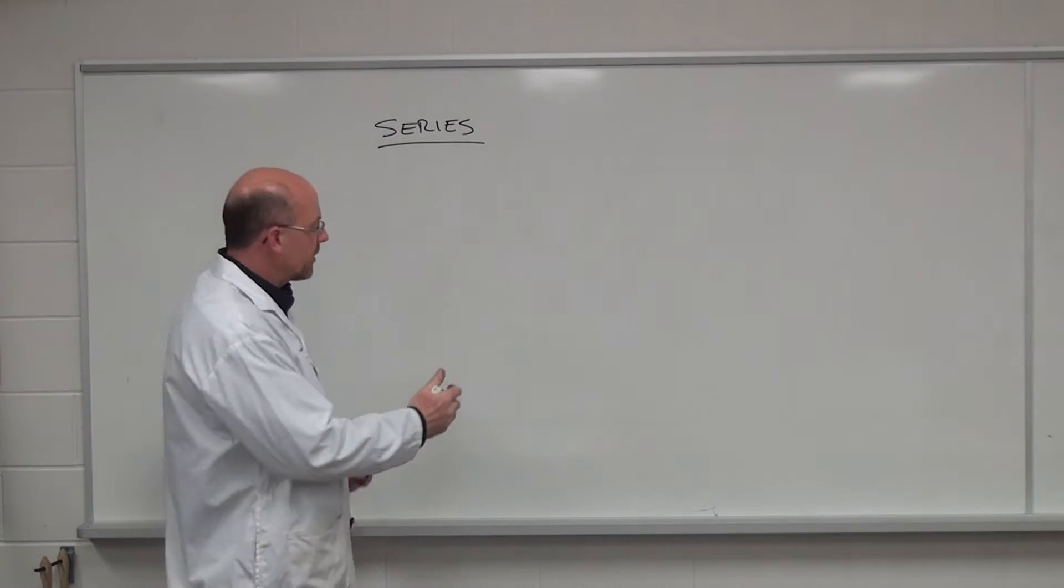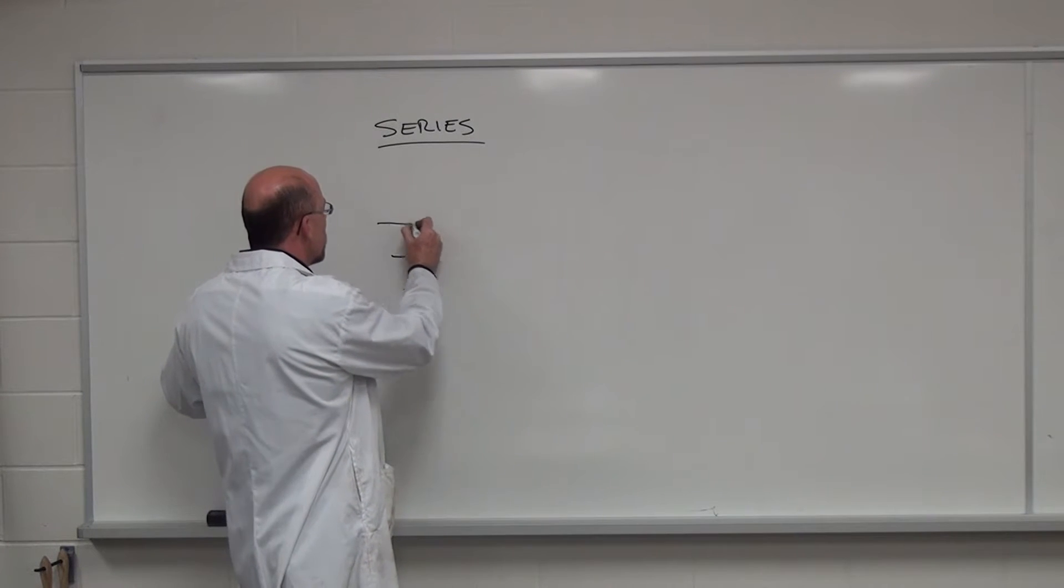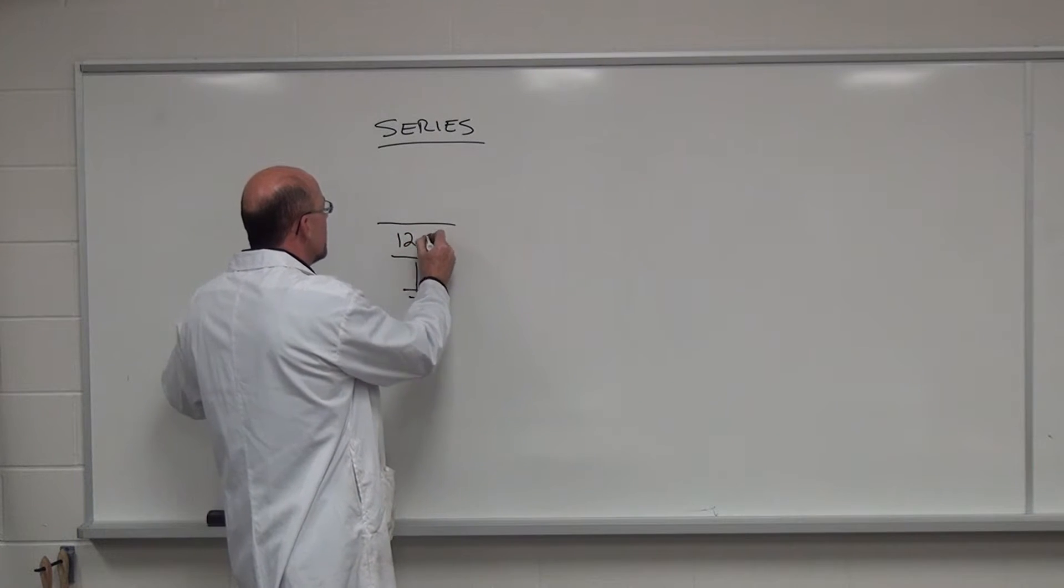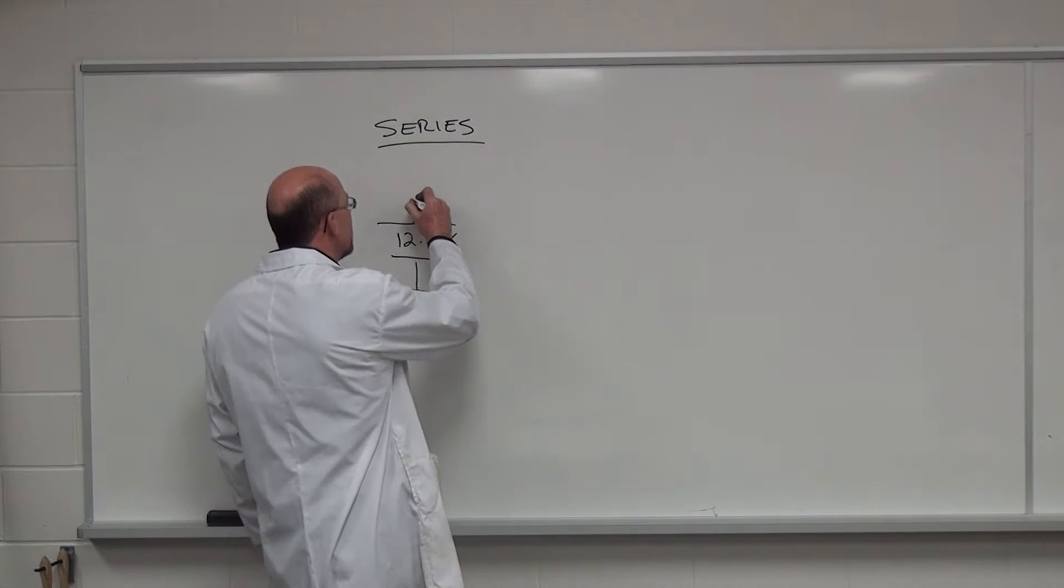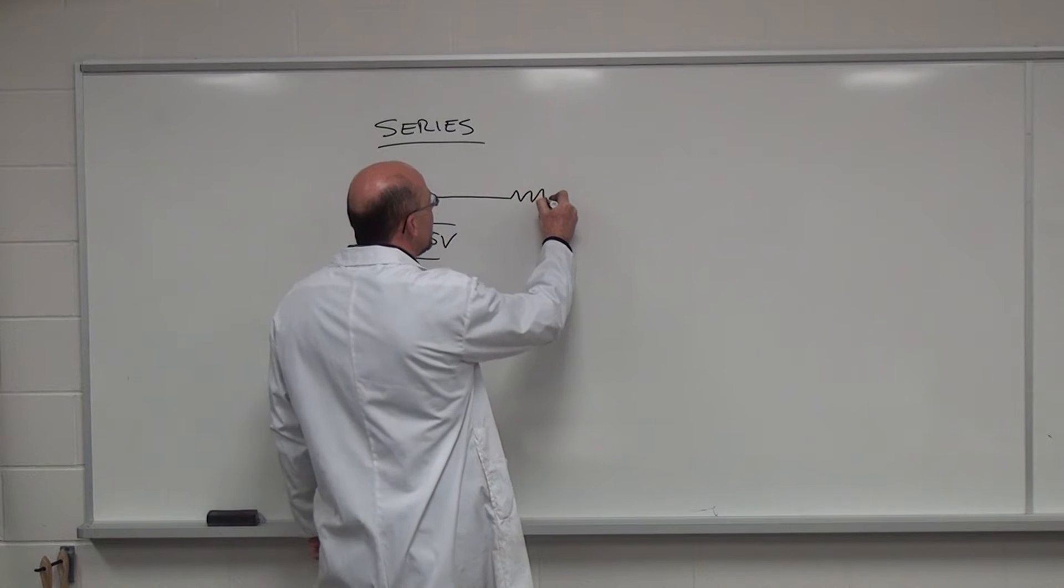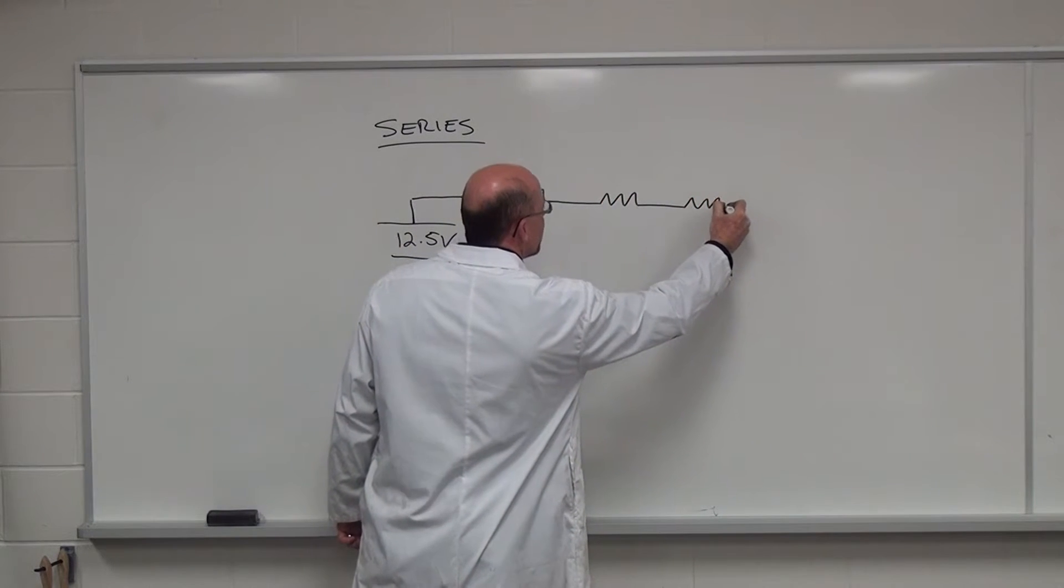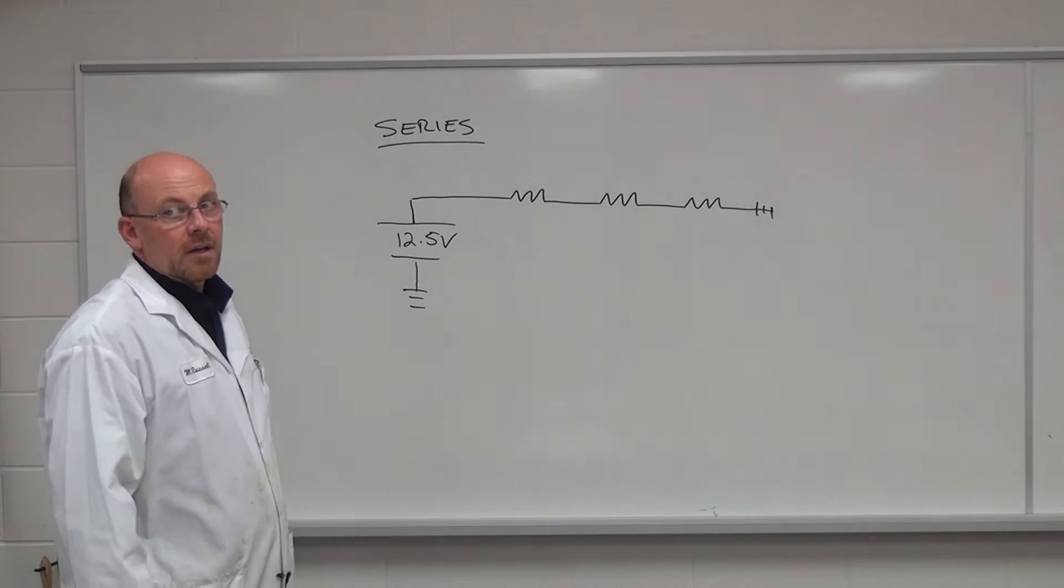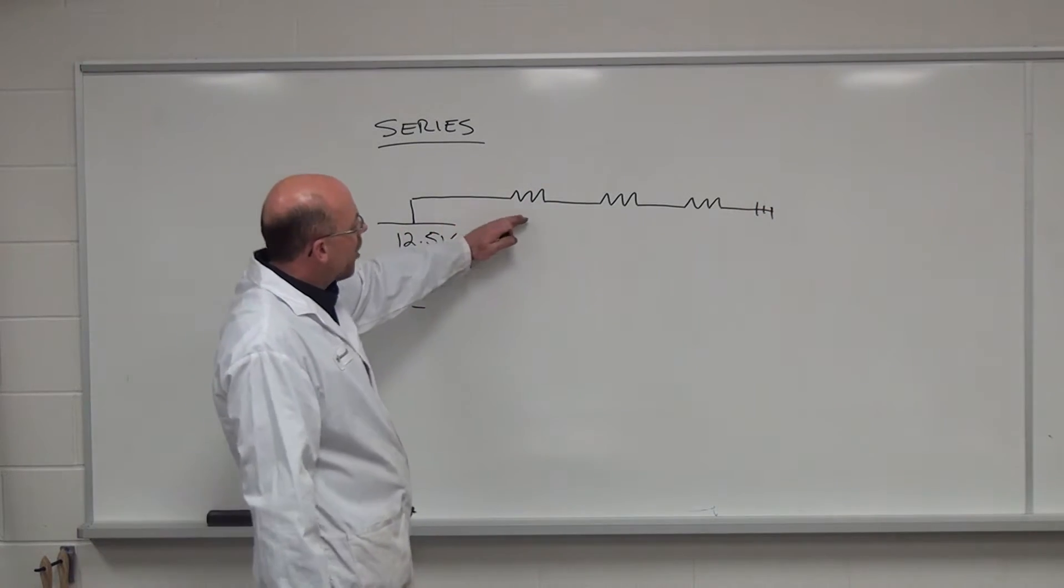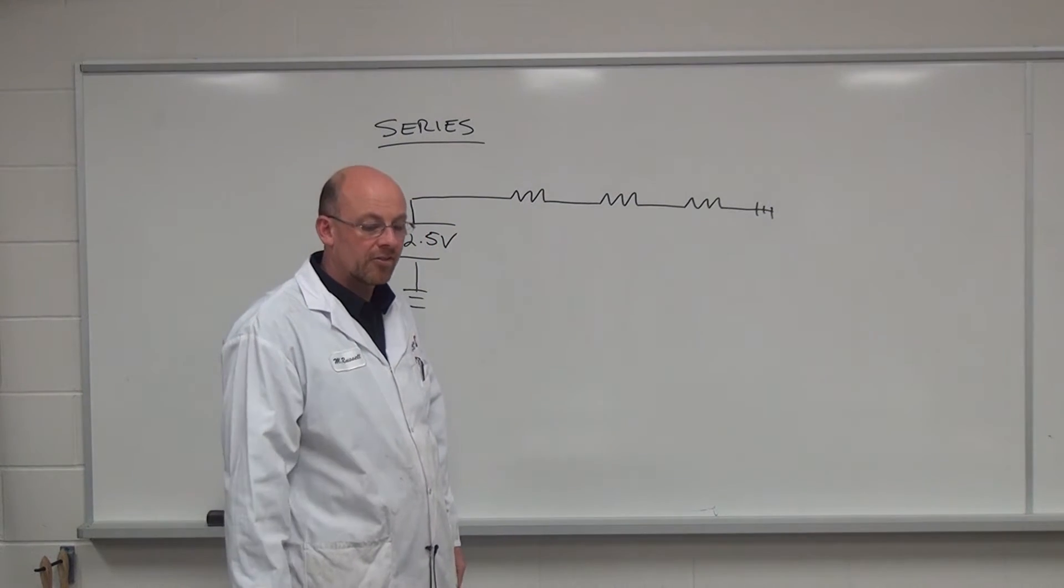And if we draw out a series circuit with a ground and we'll put a voltage source in here and then we'll put in a couple of resistors. Now one of the characteristics of a series circuit is that the sum of all individual resistance values will equal the total circuit resistance.